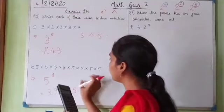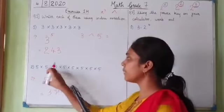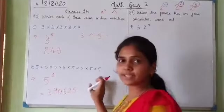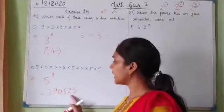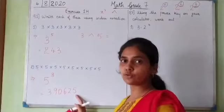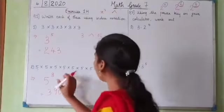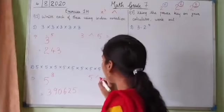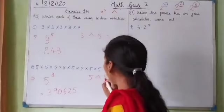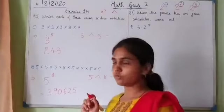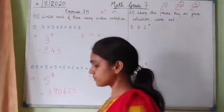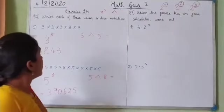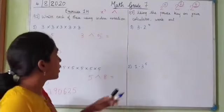5 multiplied by itself 8 times gives 390625. The keys pressed were: 5, raised-to sign, 8, equals. That was the first question.